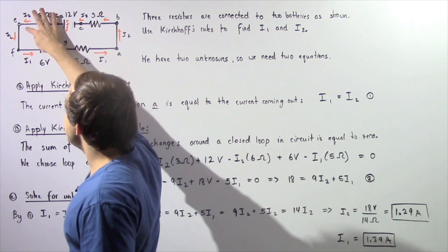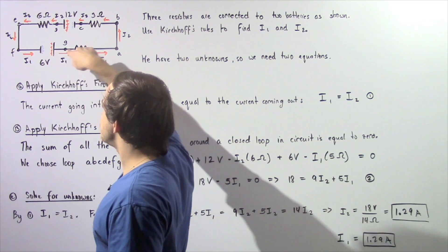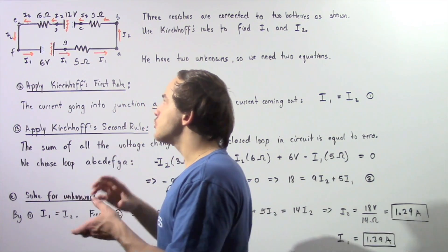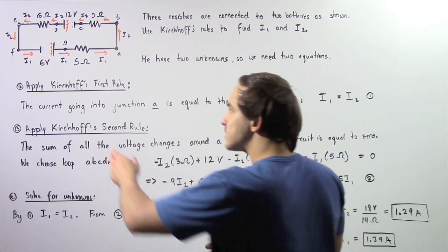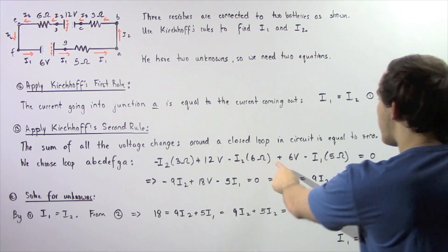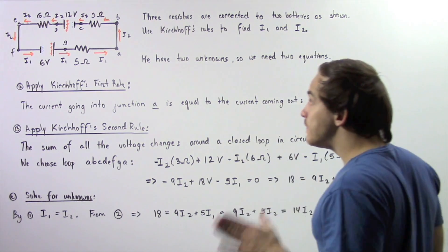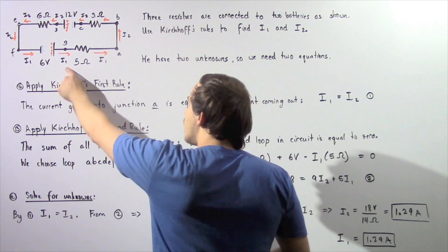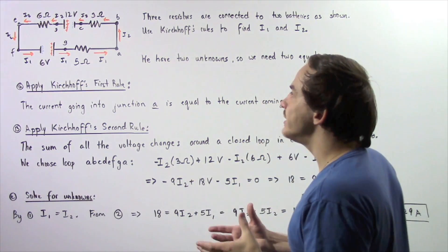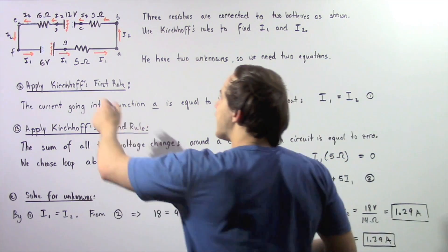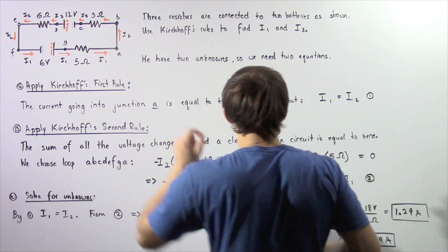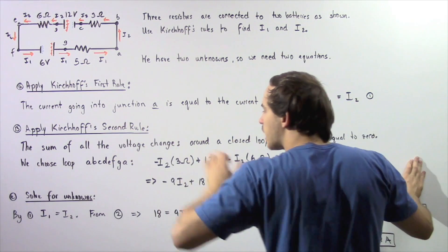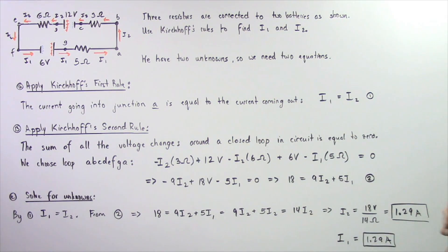From E to F nothing happens. Going from F to G, the electric current gains 6 volts, so we add positive 6 volts. Finally, from G back to A, current I1 loses a quantity of voltage given by negative I1 times 5 ohms. By Kirchhoff's second rule, the entire sum of all these voltage changes is equal to zero.